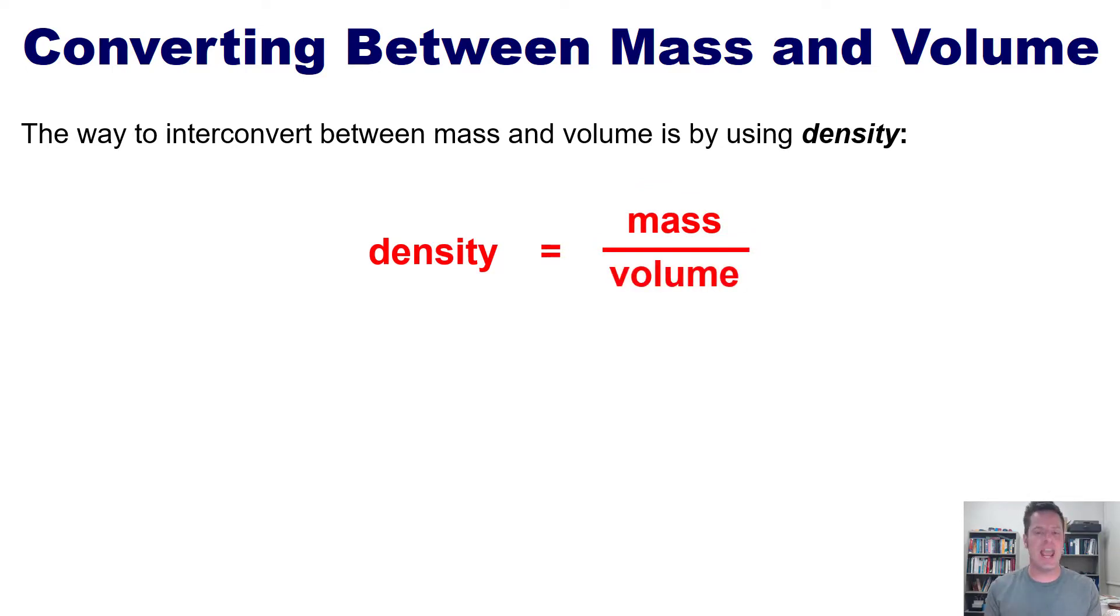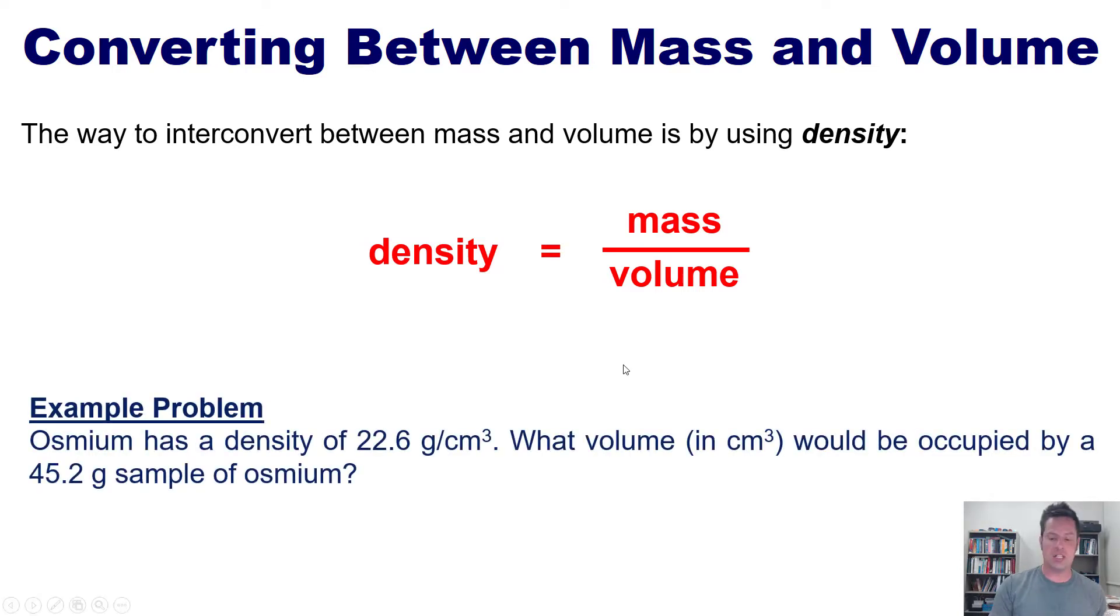The best way to teach this is to look at an example. Osmium has the density shown here. What volume then in cubic centimeters would be occupied by a 45.2 gram sample of osmium? Now at this point I invite you to pause the video and attempt to do this on your own using the skills that we learned in our dimensional analysis video earlier on. Then if you want, you can press play and watch me show you how to solve it on the board.